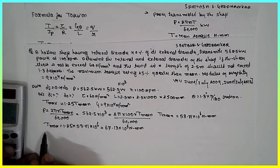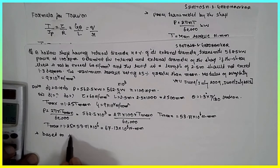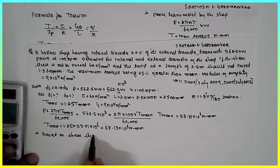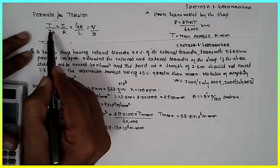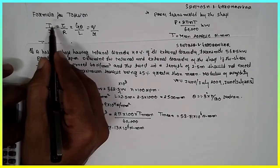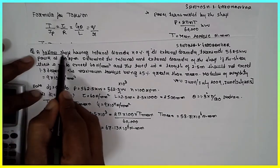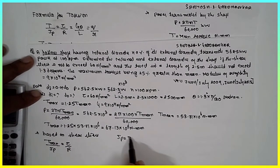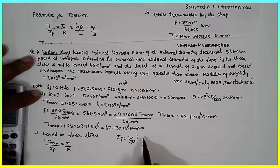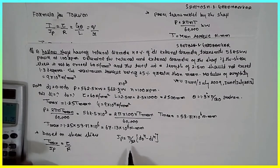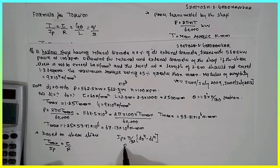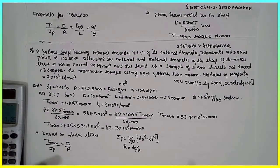Based on shear stress, use the torsion formula: T_max = J_P × τ / R. For a hollow shaft, the polar moment of inertia is J_P = π/32 × (D0⁴ − Di⁴), and R = D0/2 (outer radius).